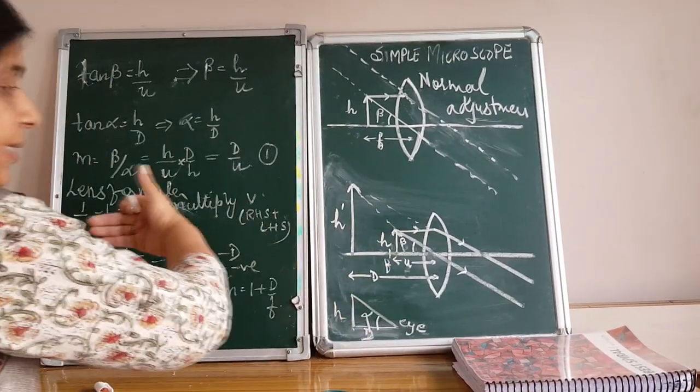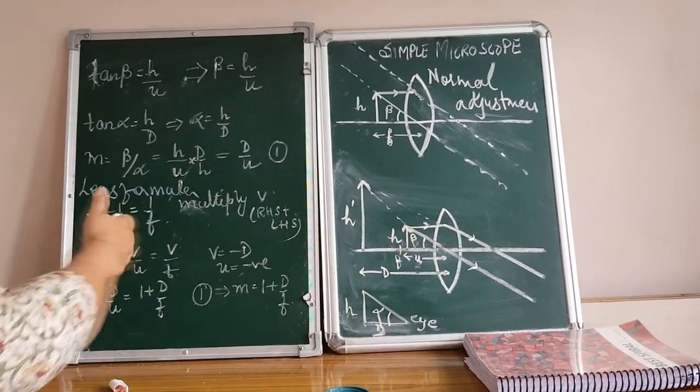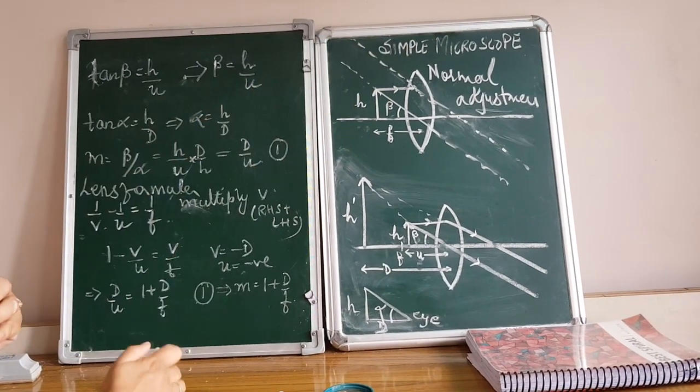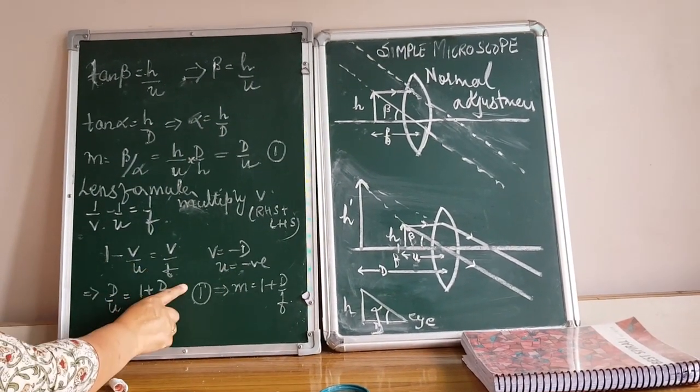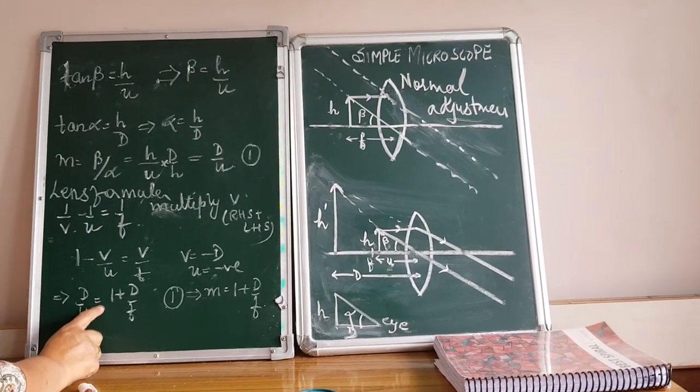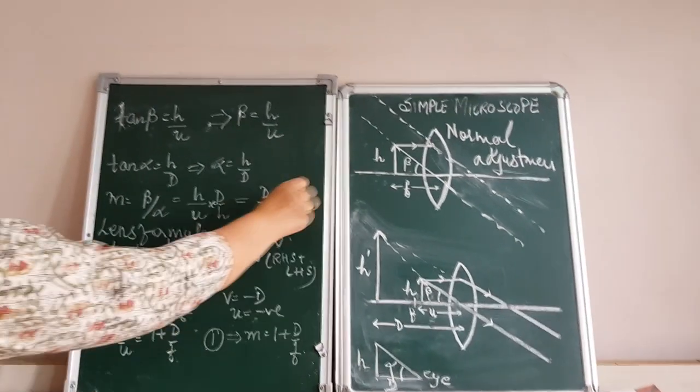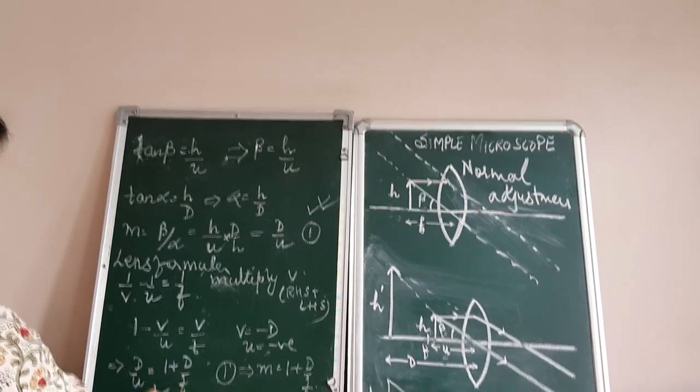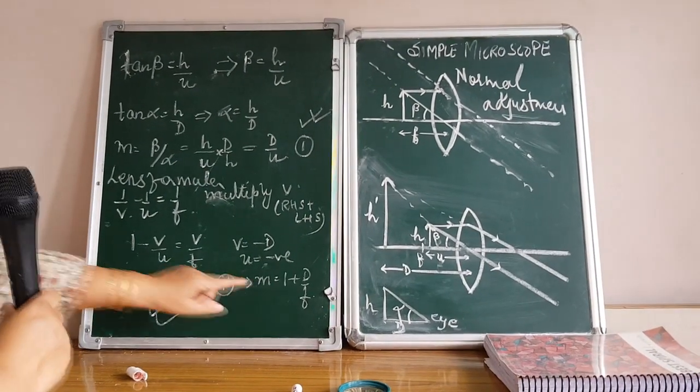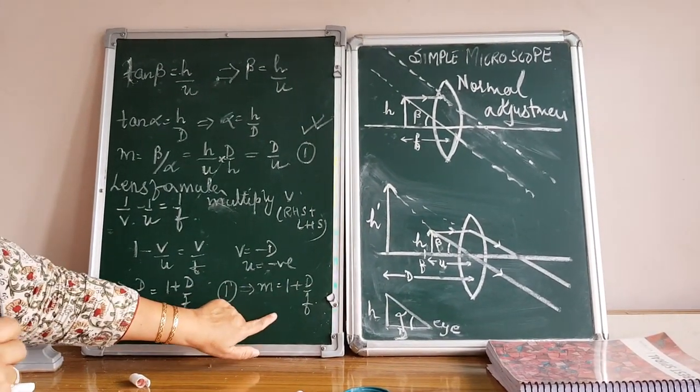V is in this direction, U is also in this direction and the light is moving in the opposite direction. So they both are negative. When I substitute, I get D by U equal to 1 plus D by F. Comparing this equation and this equation, I get M equal to 1 plus D by F.